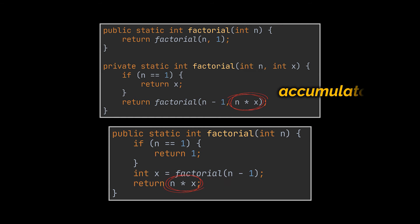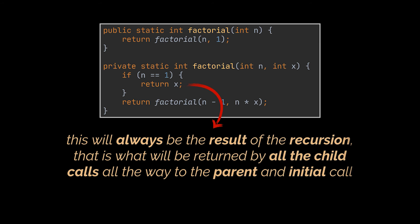The next thing you may have noticed is how we included the multiplication, which was the operation executed after the recursive call, inside the recursion itself as an accumulator. And it is the final result of that accumulator that is being returned to the user when the calculation is finished.